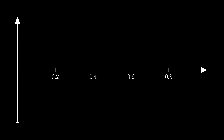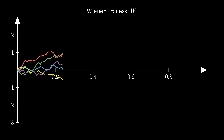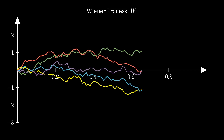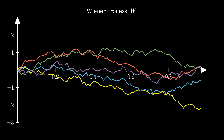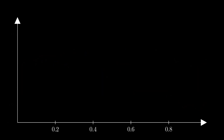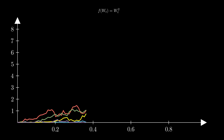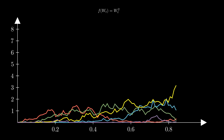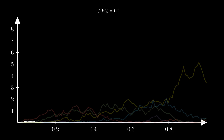To build our new calculus, we start with a familiar tool: the Taylor expansion. Here are several Wiener process paths modeling random stock price movements. Let's apply a function, say W squared, to these paths. In deterministic calculus, we'd approximate this with a Taylor expansion, ignoring higher-order terms down to 2 times W. But in the stochastic world, those higher-order terms don't vanish — they accumulate due to randomness.